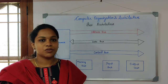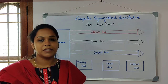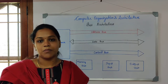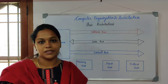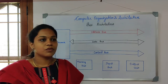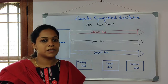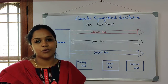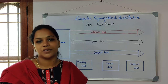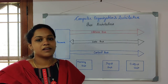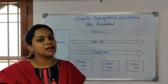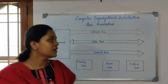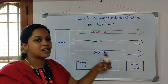In the second lecture we saw about registers present inside the processor. Various special purpose registers and general purpose registers were discussed. The special purpose registers inside a processor are memory address register, memory data register, accumulator, program counter, and instruction register. Depending upon the architecture, the number of general purpose registers may vary. Today we will be seeing about bus architecture.